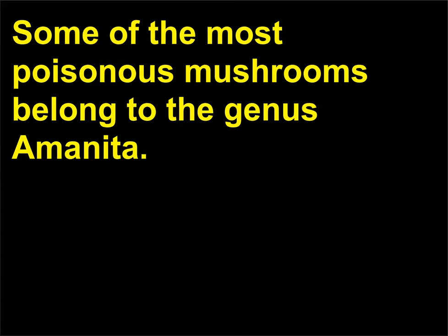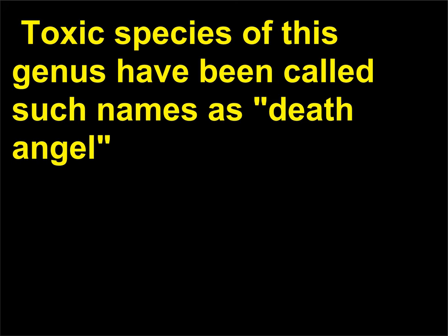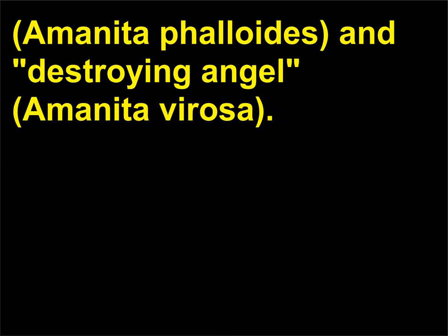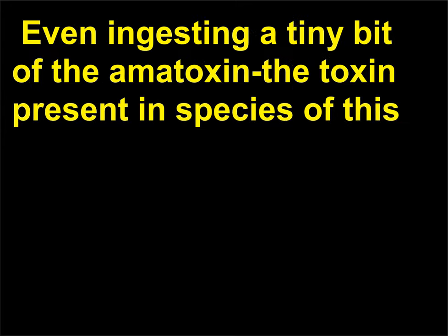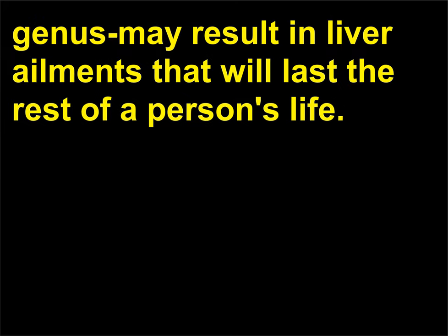What is unusual about Amanita mushrooms? Some of the most poisonous mushrooms belong to the genus Amanita. Toxic species of this genus have been called such names as Death Angel, Amanita phalloides, and destroying angel, Amanita virosa. Ingestion of a single cap can kill a healthy adult human. Even ingesting a tiny bit of the amatoxin — the toxin present in species of this genus — may result in liver ailments that will last the rest of a person's life.